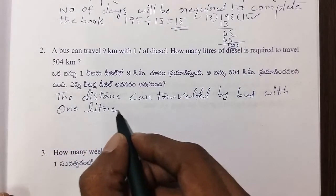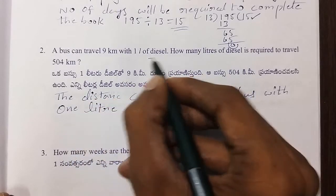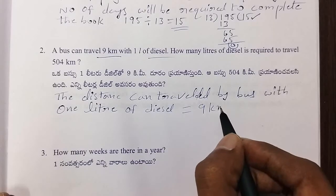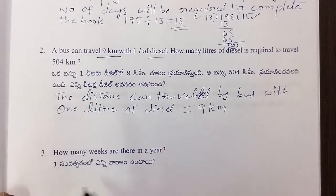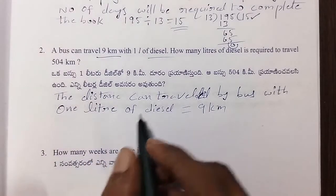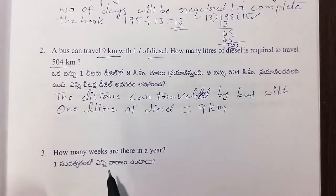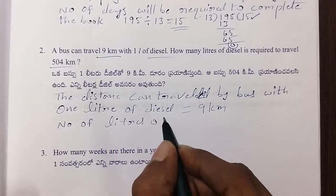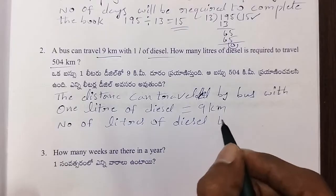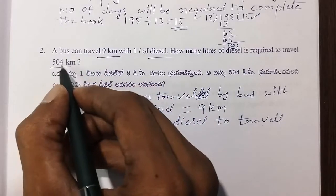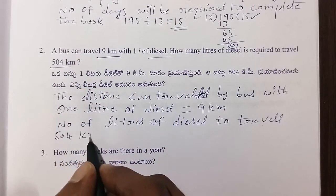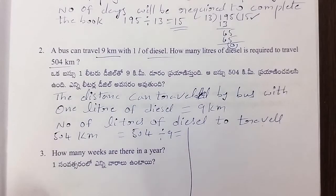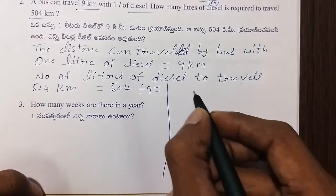The bus can travel 10 km with one liter of diesel. Number of liters of diesel required to travel 504 km.